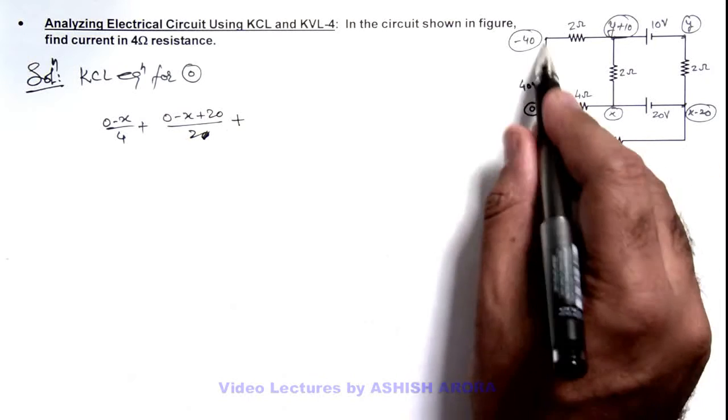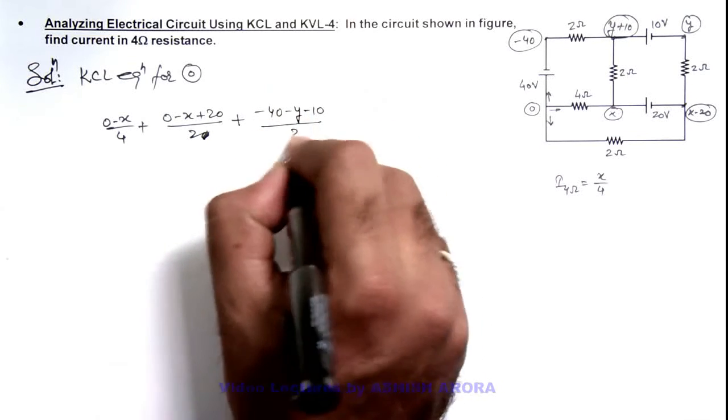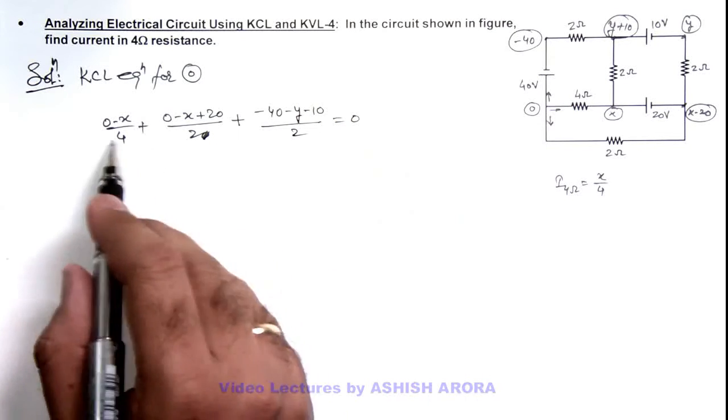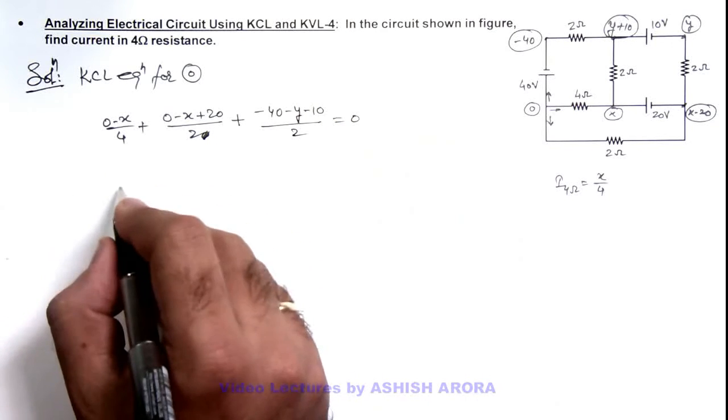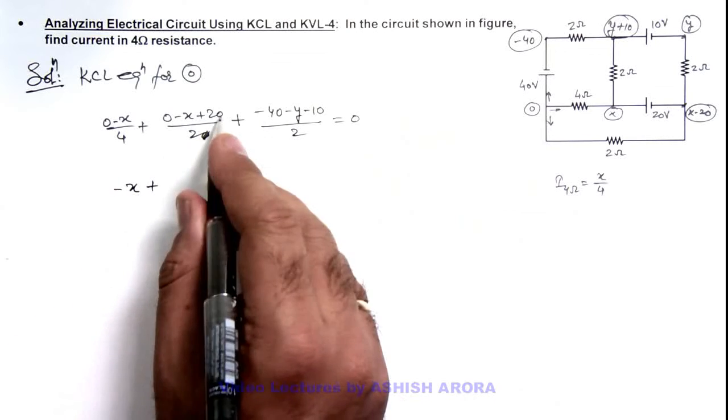Plus in this direction, it is minus 40 minus y minus 10 divided by 2, and this should be equal to zero. Here if we take 4 as LCM, the result we are getting is minus x plus this will be